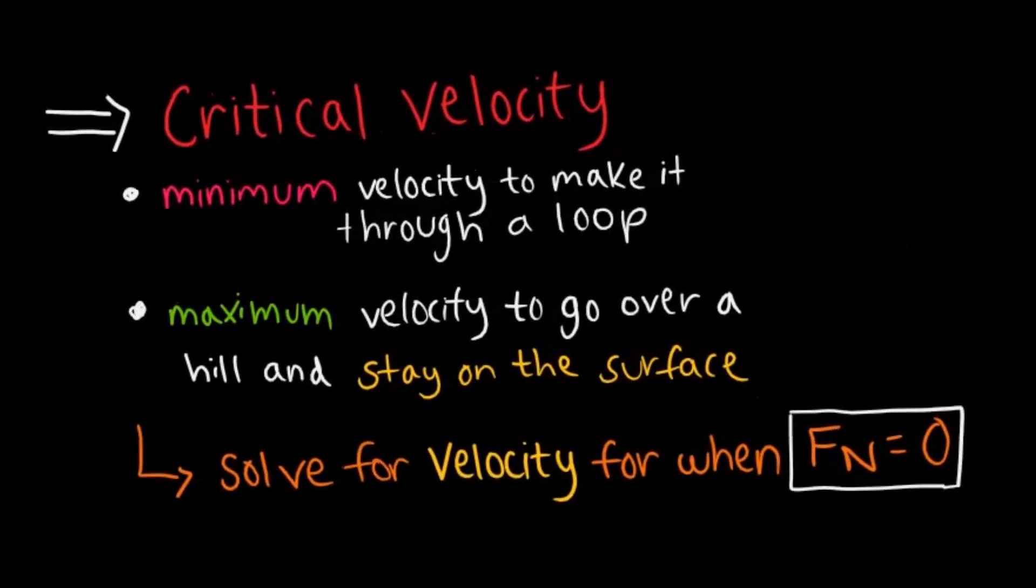So there is this thing called critical velocity. Critical velocity is basically the minimum or maximum velocity you need to either make it through a loop or to go over a hill or stay on a surface. Essentially, this is where you're going to be setting the normal force to zero and then solving for velocity there. So usually it's going to involve some sort of contact, like a car on a hill or a car on a surface or something.